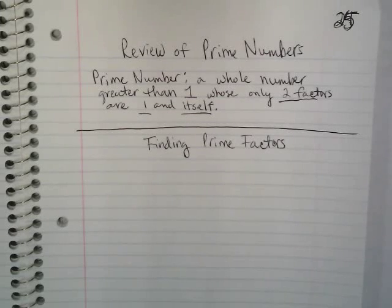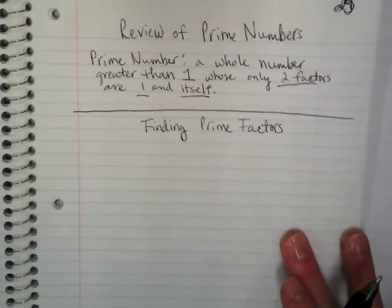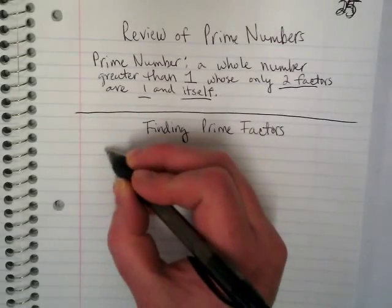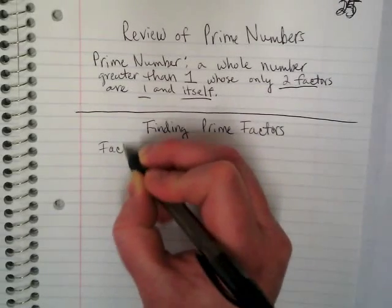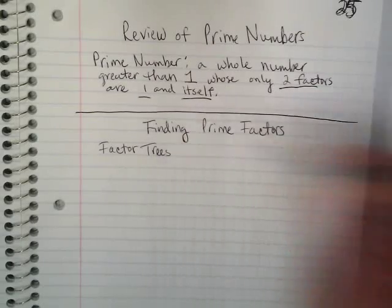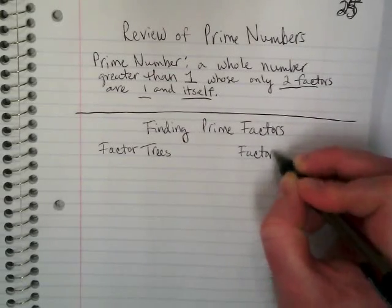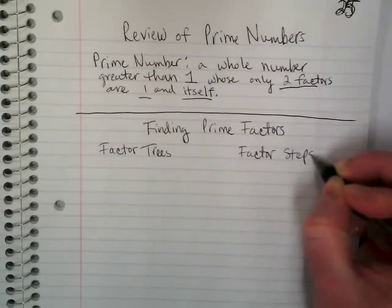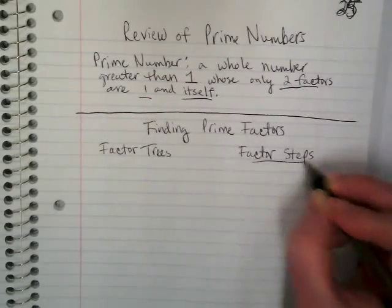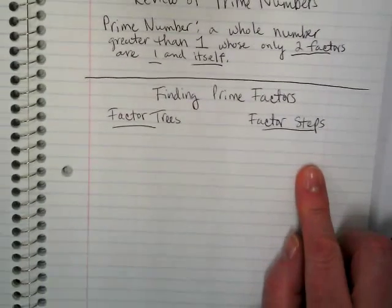In order to factor numbers and terms, we need to be able to break things down into their prime factors. There are a couple ways of doing that. We have what are called factor trees — this is how I learned it when I was a kid. And then there's also what's called factor steps, which I actually like better now as a visual learner. But I'm going to show you both because not all learners learn the way I do.